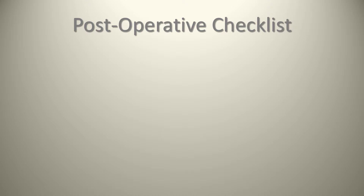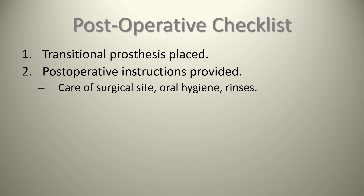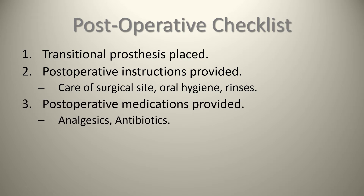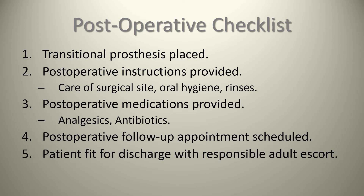Postoperative checklist. At the end of the procedure, one must confirm the following five things: one, ensuring any transitional prosthesis has been placed — in this case there was none; two, postoperative instructions have been provided for care of the surgical site, oral hygiene, and any required rinses; three, postoperative medications — analgesics and antibiotics — have been provided; four, postoperative follow-up appointments including suture removal have been scheduled; and five, ensuring the patient is fit for discharge with a responsible adult escort.